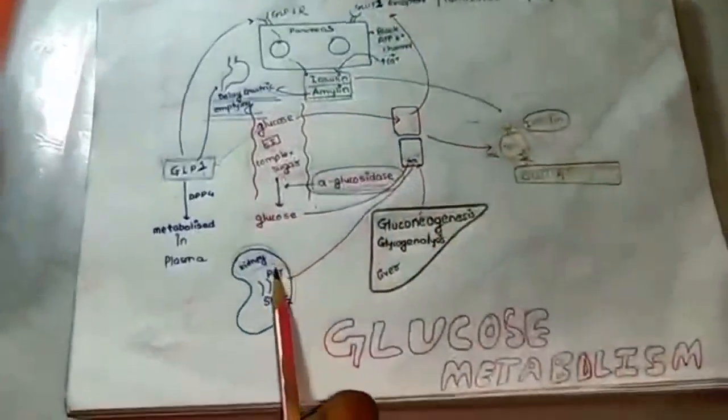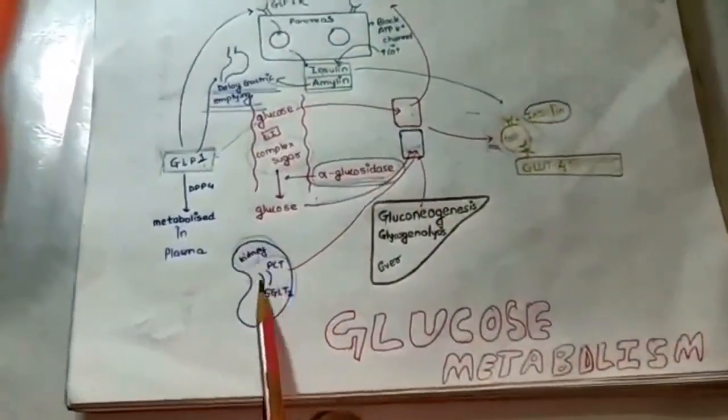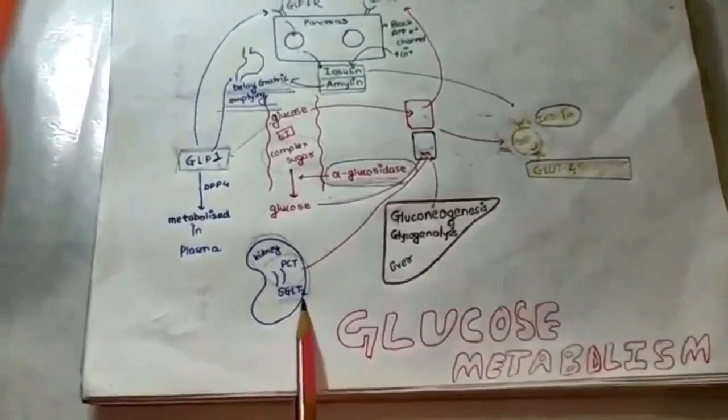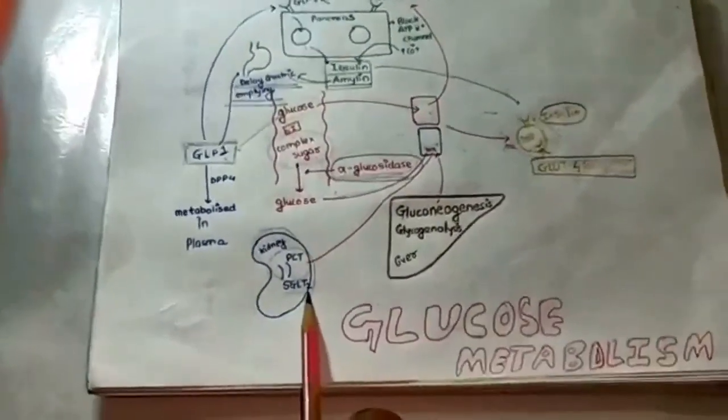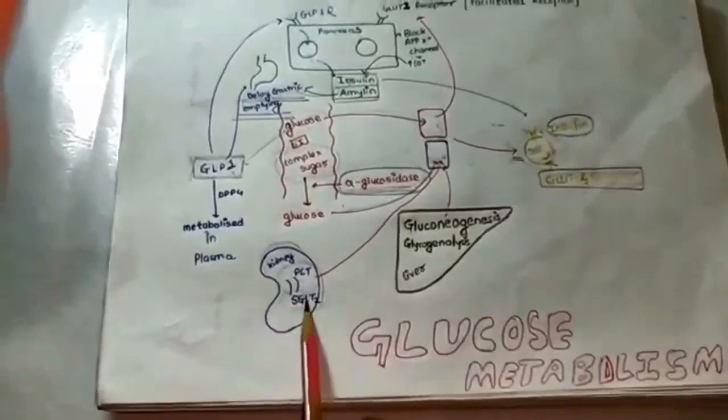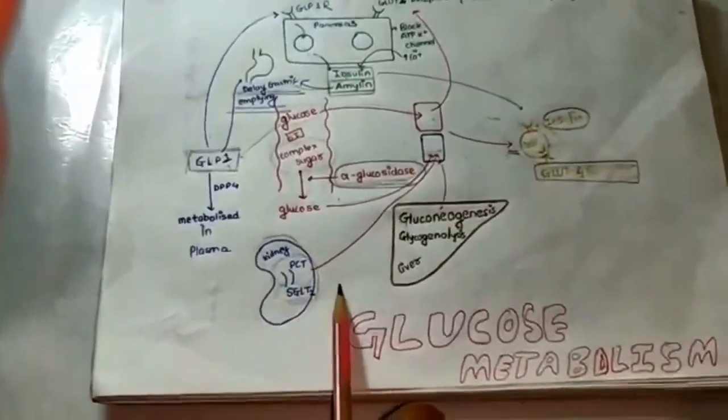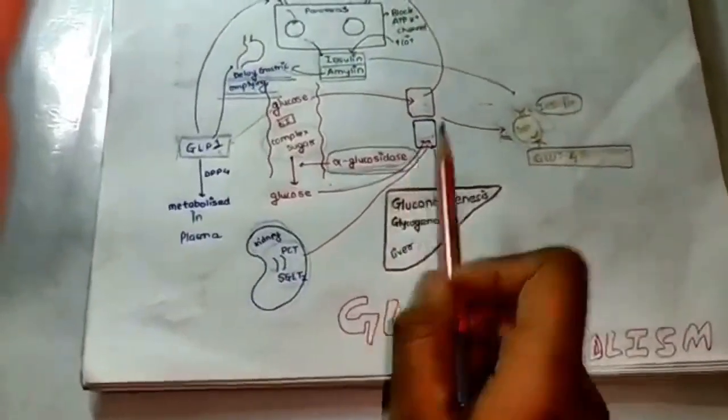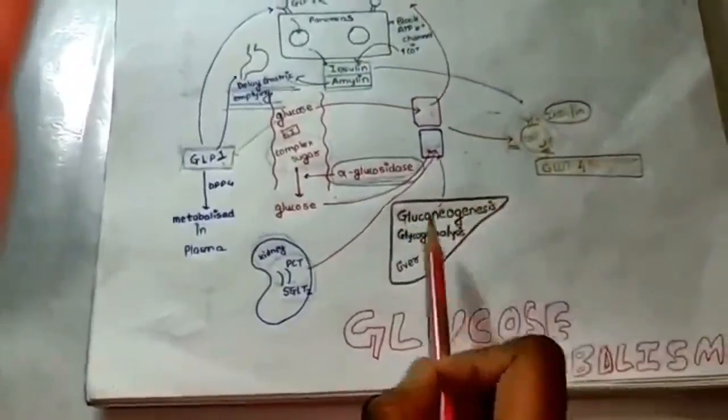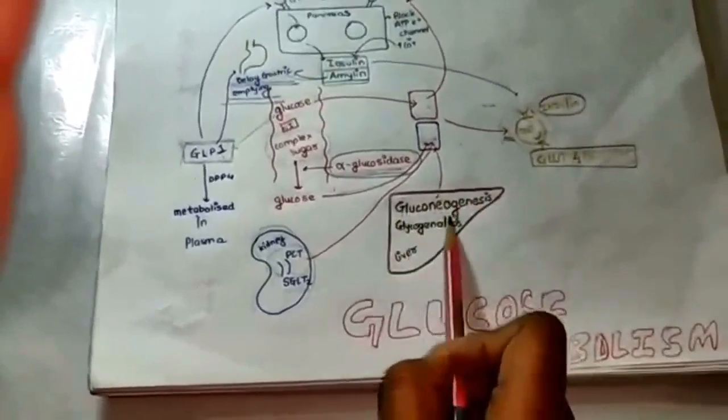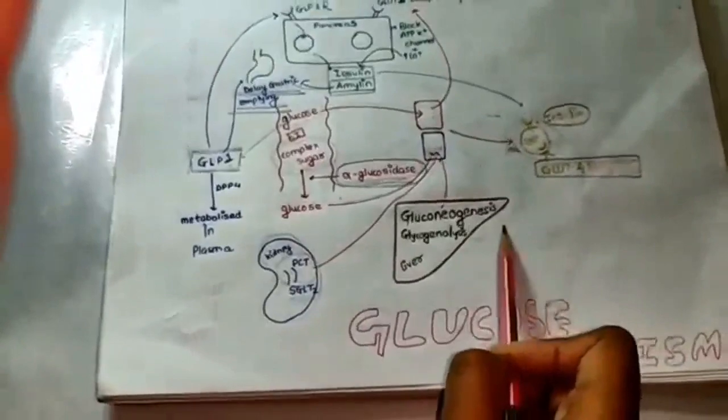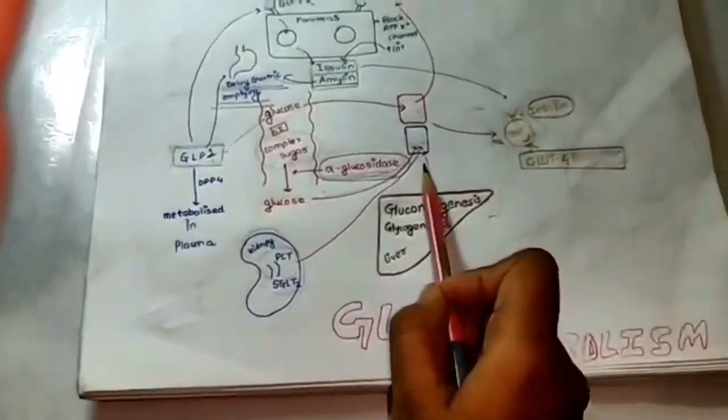Now, we have our kidney and our kidney consists of proximal convoluted tubule. We all know that we have a co-transporter called SGLT2, the sodium glucose co-transporter. This will take the glucose from the urine and put it into the systemic circulation. Also, we know in our liver two processes take place: gluconeogenesis and glycogenolysis which lead to the formation of glucose. This glucose will also end up in the metabolic circulation.